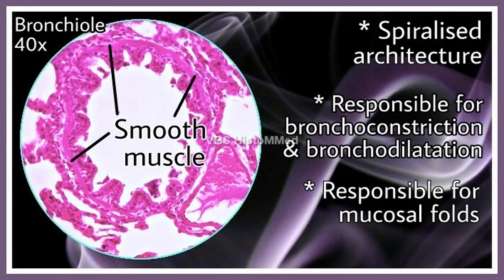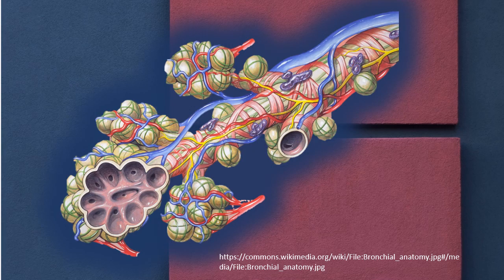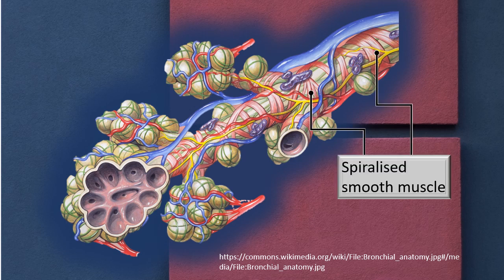This photograph gives a better picture of the spiralized architecture of smooth muscle. You can beautifully see how the smooth muscle fibers are arranged in a spiral design around the mucous membrane.